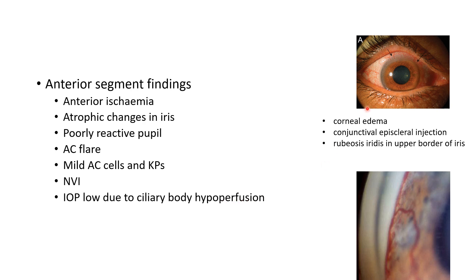This picture shows anterior segment findings in a case of ocular ischemic syndrome. There is corneal edema, conjunctival episcleral injection, and rubeosis iridis in the upper border of iris. This picture shows rubeosis iridis in a case of ocular ischemic syndrome. Remember, the IOP will be low due to ciliary body hypoperfusion.